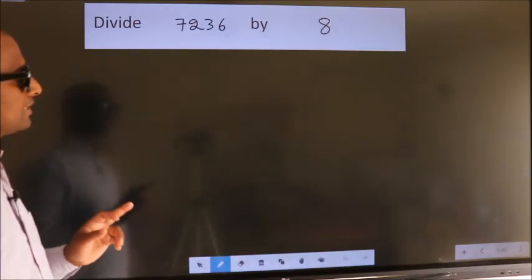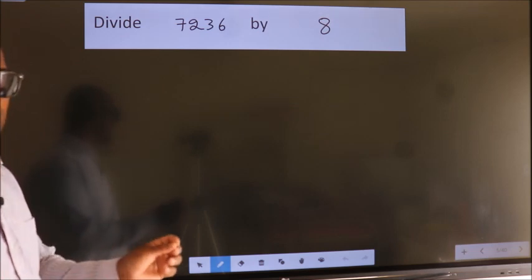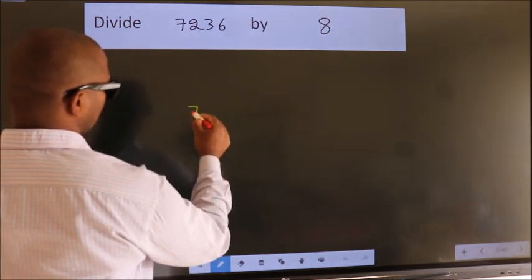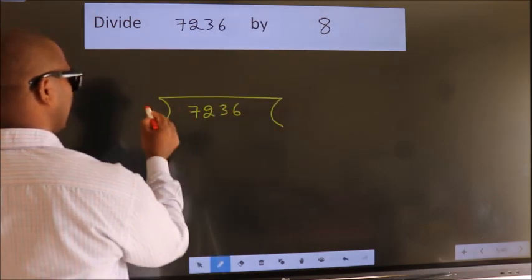Divide 7236 by 8. To do this division we should frame it in this way. 7236 here, 8 here.